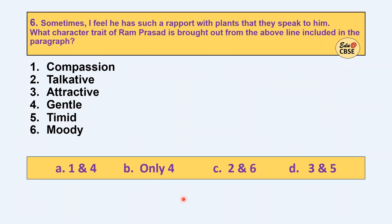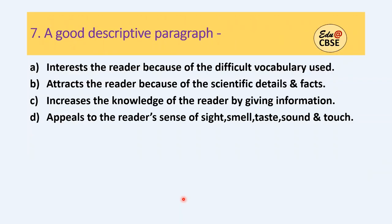Now sixth one: 'Sometimes I feel he has such a rapport with plants that they speak to him.' What character trait of Ram Prasad is brought out from the above line? Seventh and the last one: read the options and select what a good descriptive paragraph should have. In the exam you get six questions and attempt five. I've given an example of seven questions. Now it's time to check the answers.